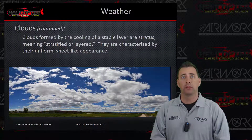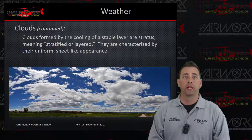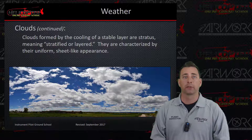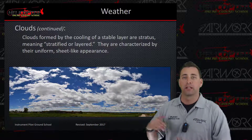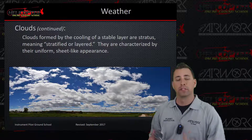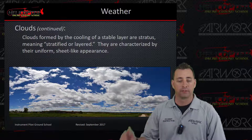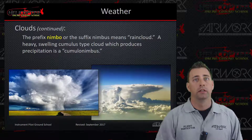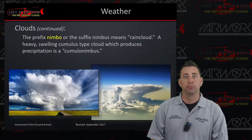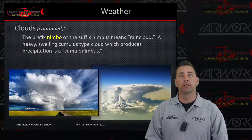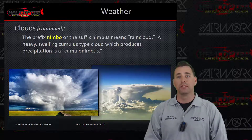Clouds formed by the cooling of a stable layer are stratus, meaning stratified or layered. They are characterized by their uniform, sheet-like appearance — nice and flat, as shown in this picture. The prefix nimbo or the suffix nimbus means rain cloud. A heavy, swelling cumulus-type cloud which produces precipitation is a cumulonimbus cloud.